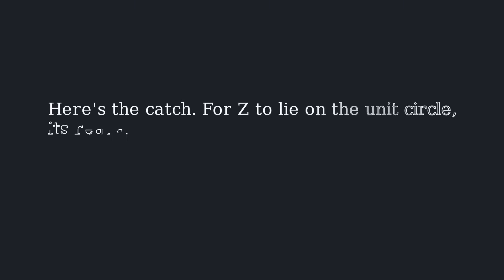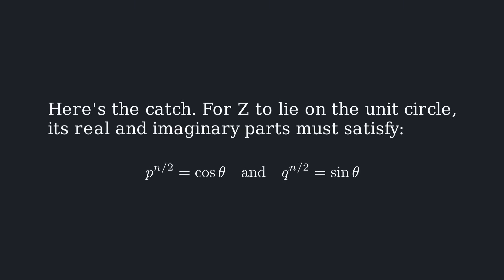Here's the catch. For z to lie on the unit circle, its real and imaginary parts must satisfy p to the n over 2 equals cosine theta and q to the n over 2 equals sine theta.